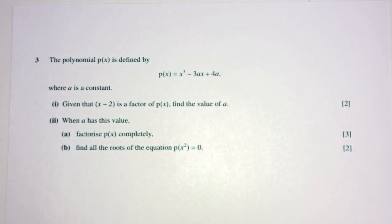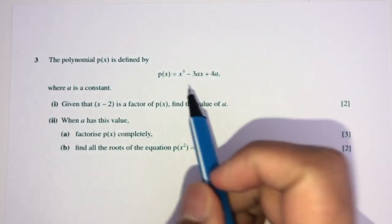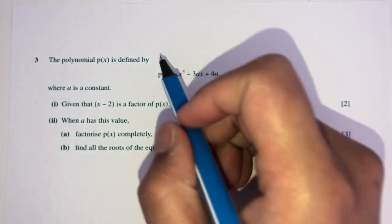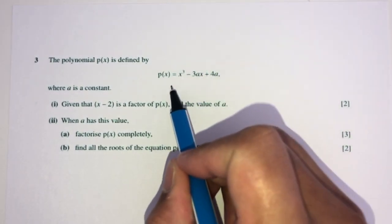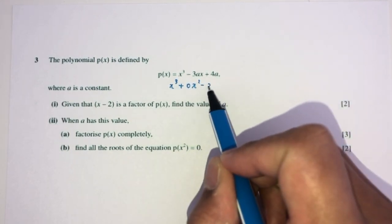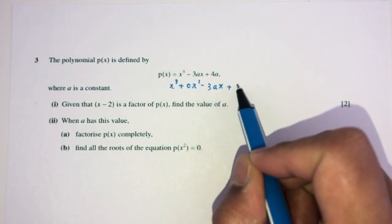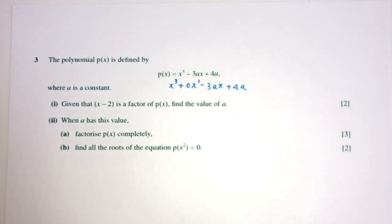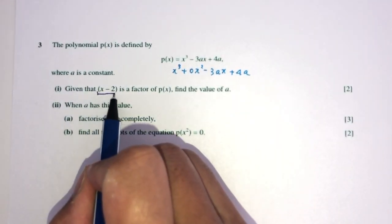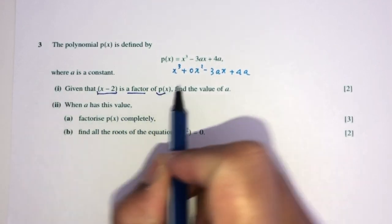Let's move on to question number 3. Here we have p of x is defined by this. Let me rewrite this. As you can see, something is missing here. We have x cubed plus 0x squared minus 3ax plus 4a. Now we have given that x minus 2 is a factor of p of x. Find the value of a.